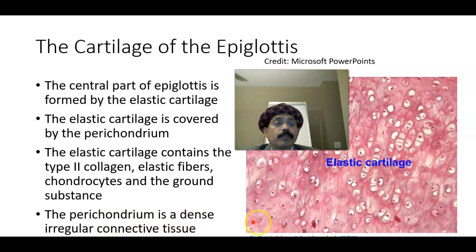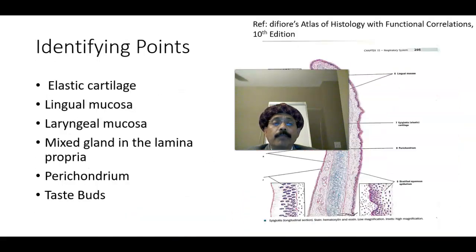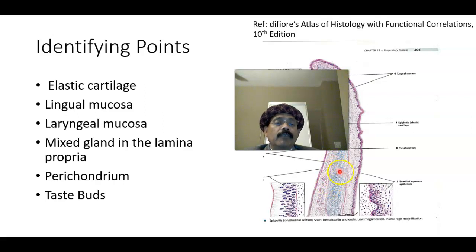The perichondrium is not shown here, but in our previous image we have seen the perichondrium. This is the perichondrium — this is a dense irregular connective tissue — and the elastic fibers are inserted there.